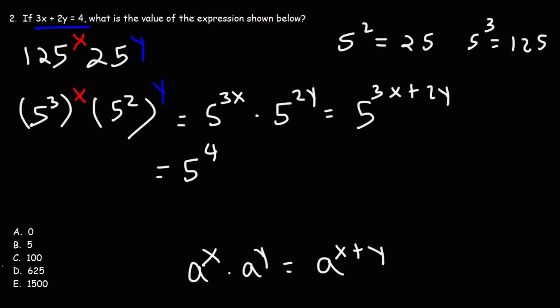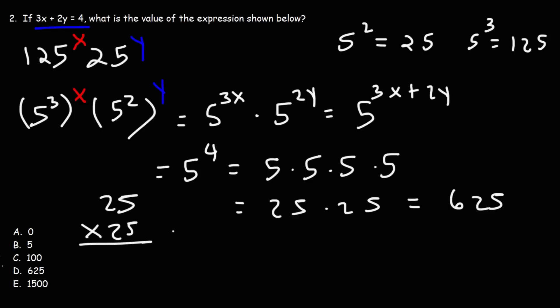So now we have 5 raised to the 4th power. If you want to write it out, you can do that as well. So 5 times 5 is 25, and the same is true for that. 25 times 25. If you have a calculator, you can just get the answer, which is 625. But if you're not allowed to use it, then you need to go back to old school math and use long multiplication. So 5 times 5 is 25. Bring over the 2. 5 times 2 is 10. Plus 2, that's 12.